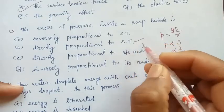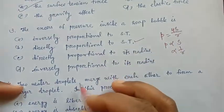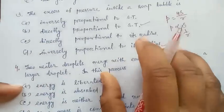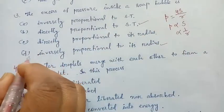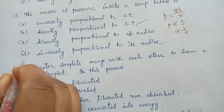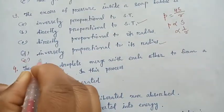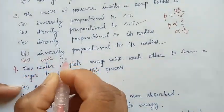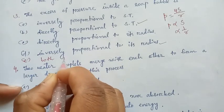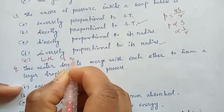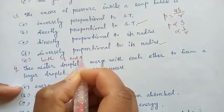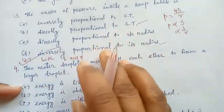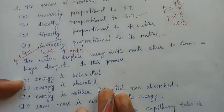So option B — directly proportional to surface tension — is correct, and also option D — inversely proportional to its radius. You may add option E: both B and D. So option E is the correct answer.